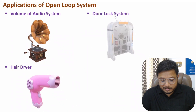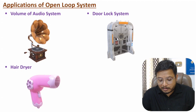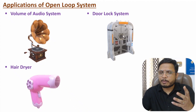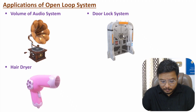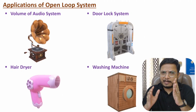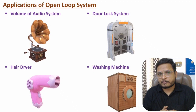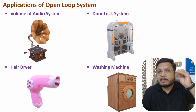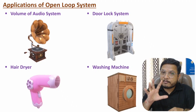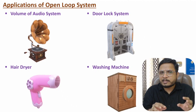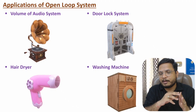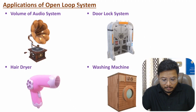The next application is a door lock system, in which input is given to the controller, the controller generates a controlled signal which is given to the plant — here the plant is the lock system. That is quite a simple example of an open loop system where there is no feedback. One more example is a washing machine. If the input is a timer — say 5 minutes — then the washing machine turns on for 5 minutes and then turns off. So based on a simple input, the output is there, with no feedback.